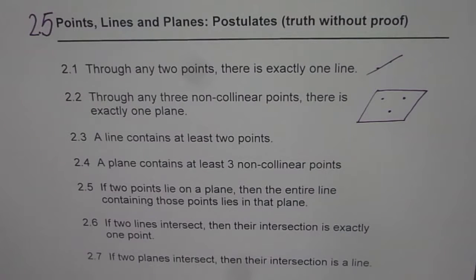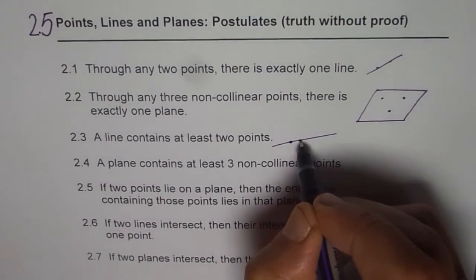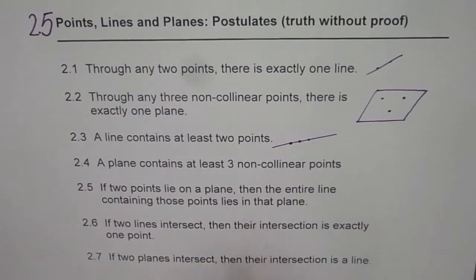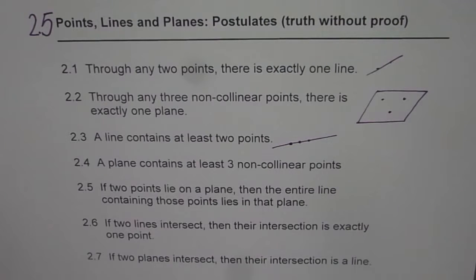Postulate 2.3: A line contains at least two points. A line may contain an infinite number of points, but at minimum it must have two. The first two postulates define a line and a plane, and postulates 2.3 and 2.4 tell us more about these objects.